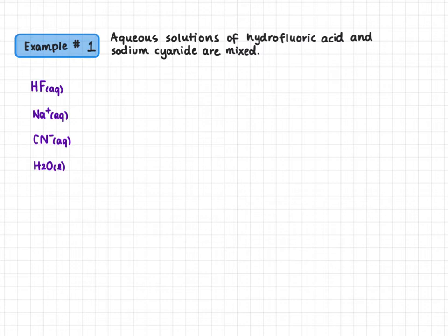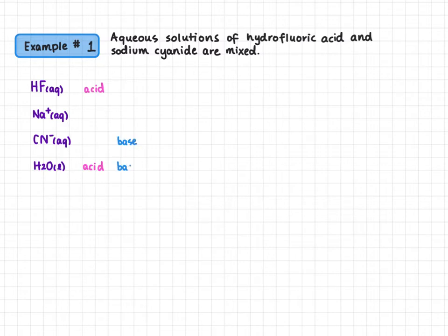Now we classify as acid or base. For acids we're looking for a donatable hydrogen — hydrofluoric acid is an acid (it's right in the name) and water is also an acid, as one of its hydrogens is donatable. For bases we have cyanide and water. Cyanide has a negative charge that allows it to take a proton; water has lone pairs on oxygen that can take a proton. Sodium is a spectator ion and is not involved in nearly every reaction.